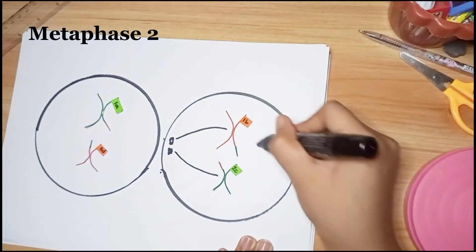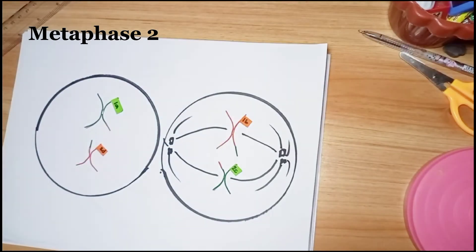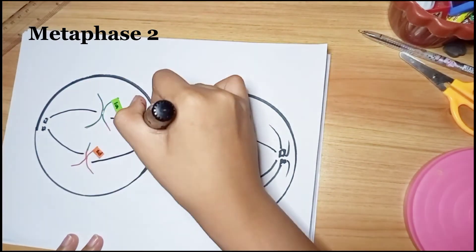During metaphase II, the centromeres of the paired chromatids align along the equatorial plate in both cells.